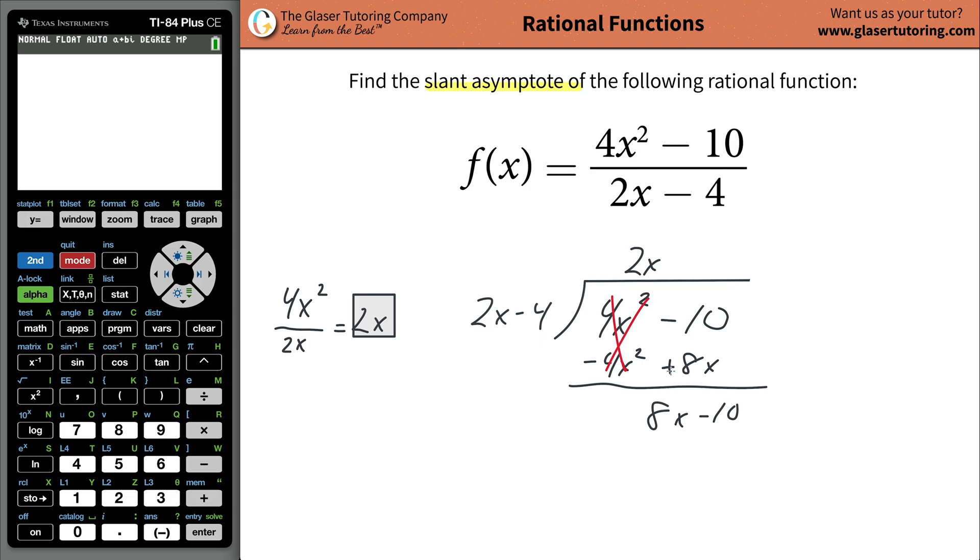Now you're going to repeat the process. You're going to repeat the process as long as there is an equal power of x here as there is here. This is to the first, and that's to the first, so you're going to continue. Now we take the highest power of x with its coefficient, the 8x, and divide it by the highest power of x, and this just becomes a 4, a positive 4. You're going to add that to the 2x from before.